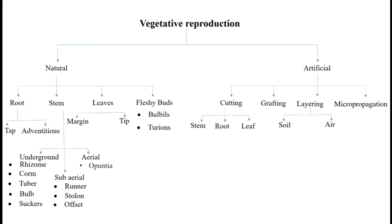What is vegetative reproduction? It is the formation of new plants from vegetative units like buds, rhizomes, tubers, stem cuttings, etc. These vegetative units are also known as vegetative propagules. Sometimes somatic parts are detached from the parent body and new individuals develop. We call this vegetative reproduction.